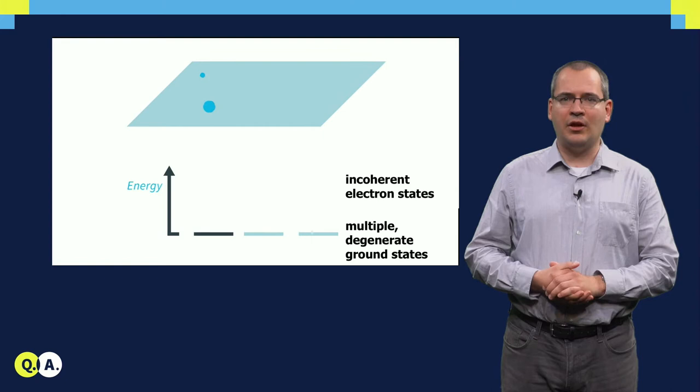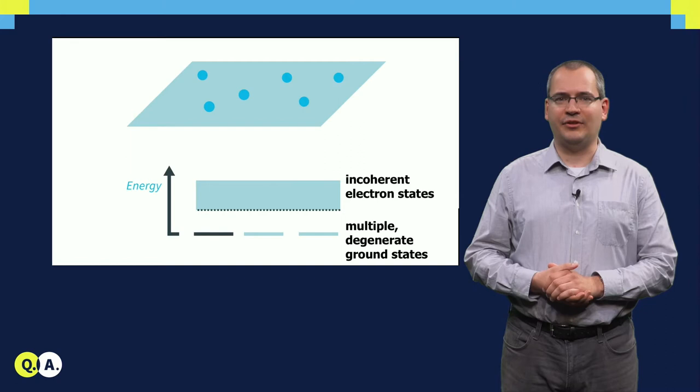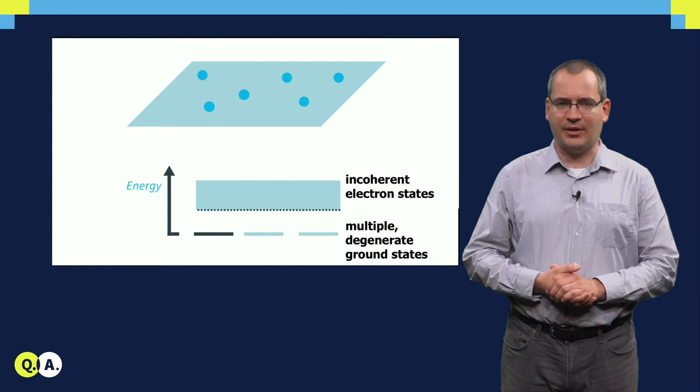Now let's take a set of these non-abelian anyons. A key property of this system is that it has multiple quantum mechanical states with the same lowest energy. In other words, it has a degenerate ground state. The ground state is separated from the higher incoherent energy levels by an energy gap.